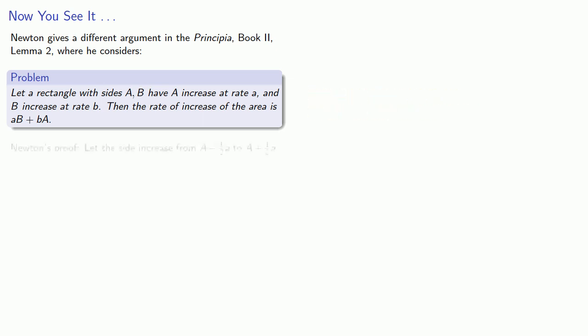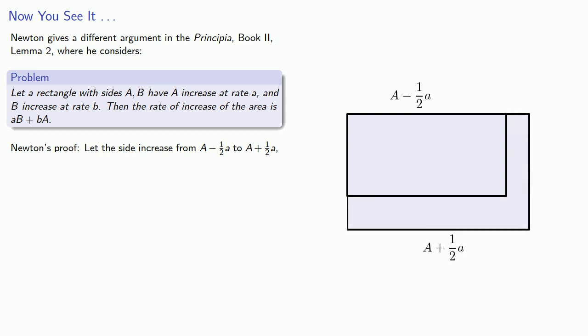Newton's proof is the following. Let the side increase from a minus a half a to a plus a half a. And so there's our increase of a. And from b minus a half b to b plus a half b.